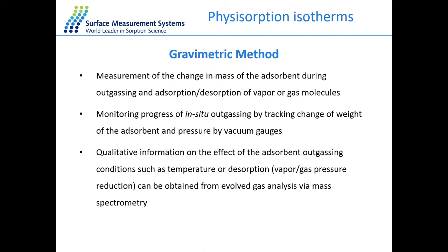The gravimetric method allows you to see whether the material is completely dry or not. We can also collect additional qualitative information during the outgassing of the adsorbent using temperature, by performing desorption measurements and coupling the gravimetric system with mass spectrometry in order to analyze evolved gas.